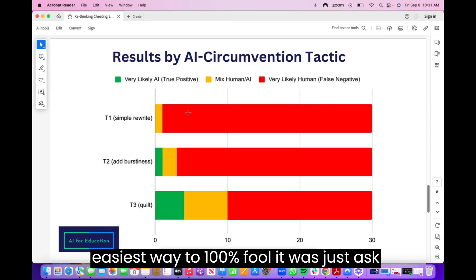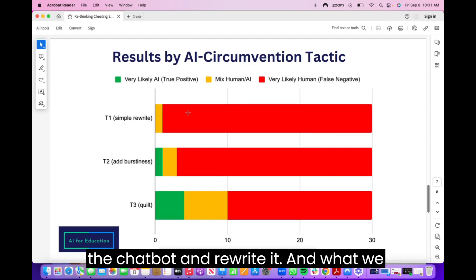But GPT-Zero and Turnitin both were very easily fooled. And then also the easiest way to 100% fool it was just to ask one prompt. So essentially take this piece of writing that you wrote, meaning the chatbot, and rewrite it. And what we saw is that 100% of these tools were fooled.